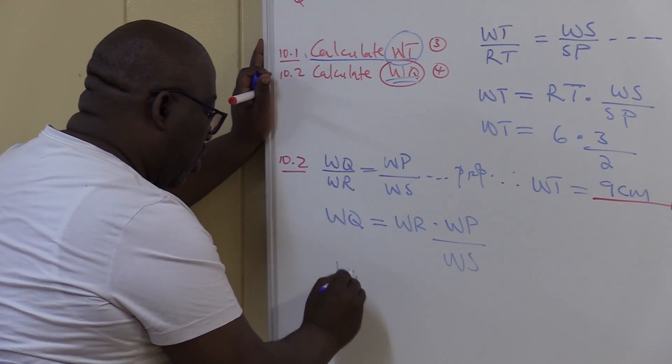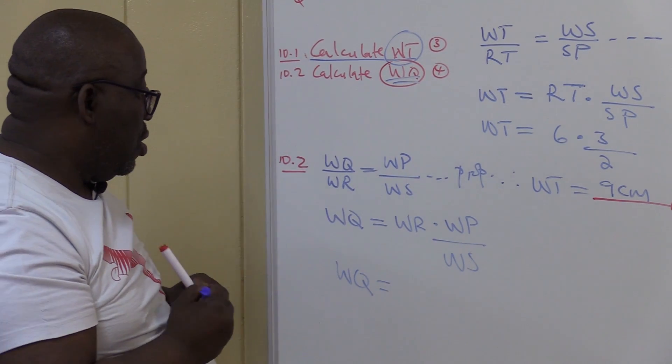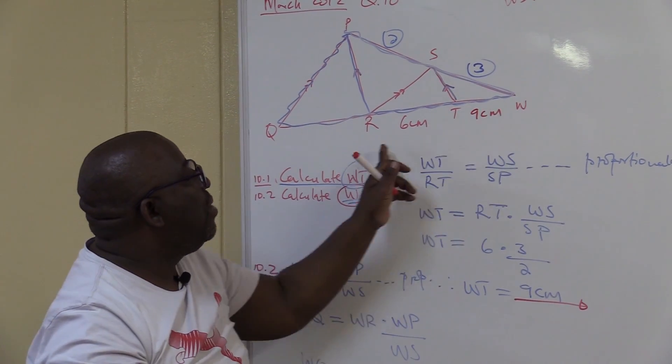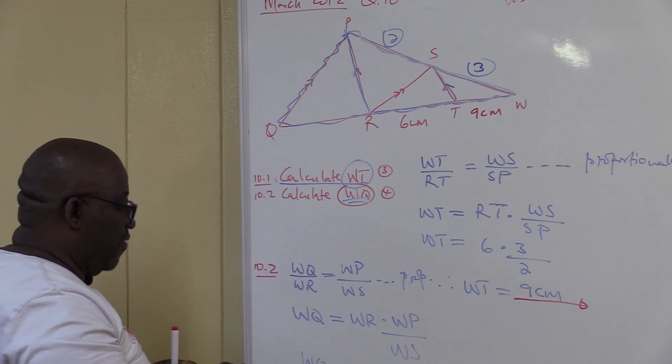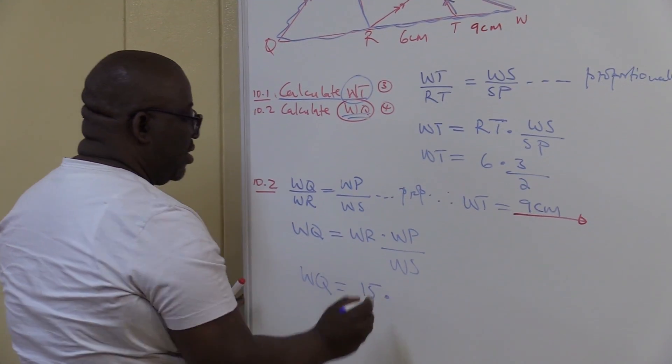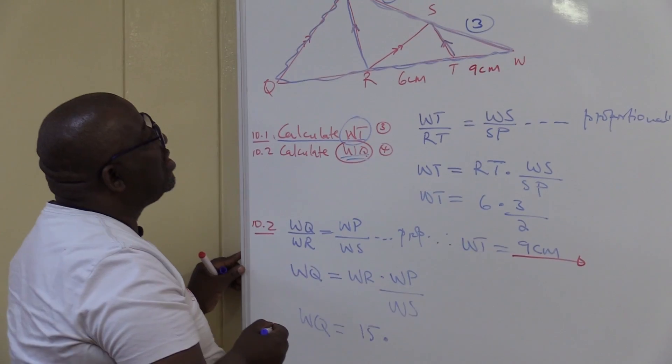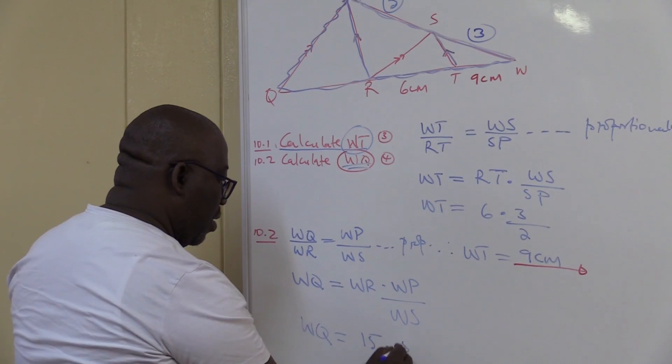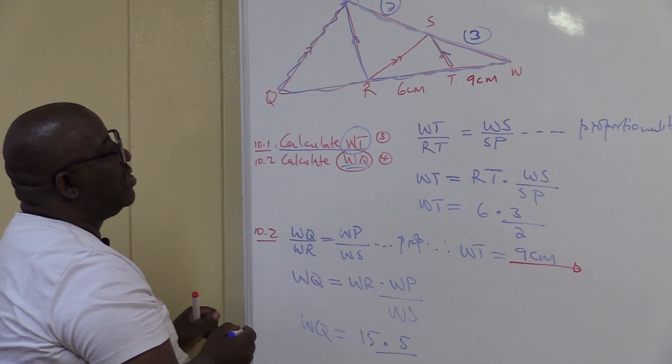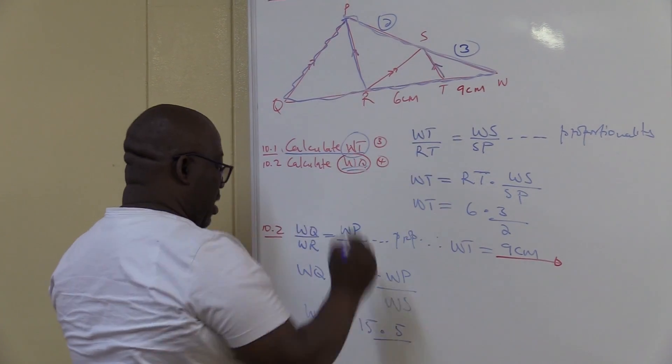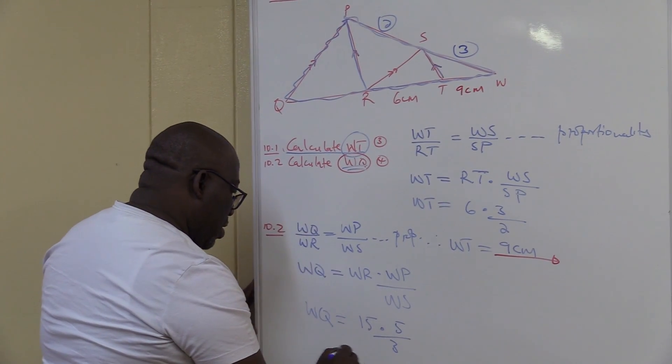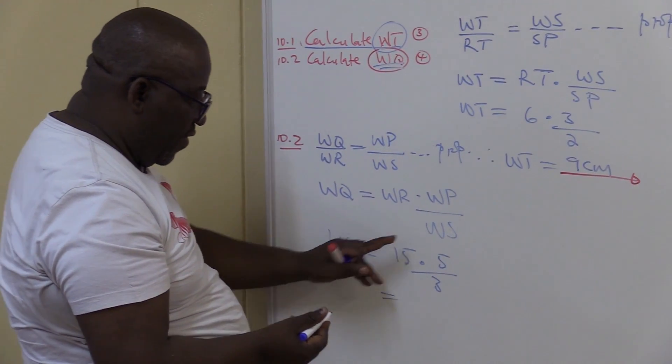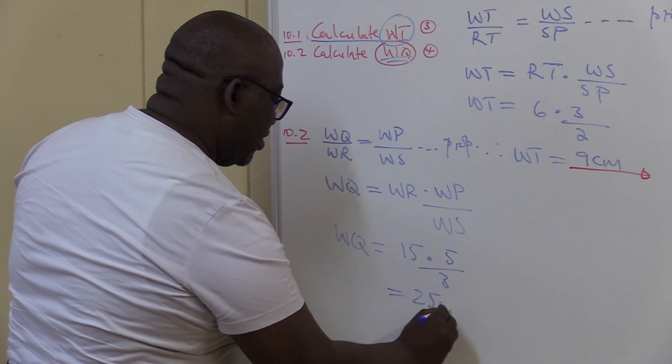Now watch. WQ will be equal to... Let me check. Do I see anything on WR? Where is WR? How many units are this? 9 plus 6, it's 15, times WP. Where is WP? 3 and 2, it's 5, over WS. What do I see on WS? I see 3. So this will be equal to 3 into 15, it's 5 times 5, it's 25. 25 centimeters.